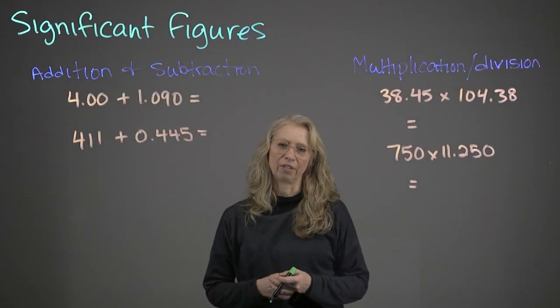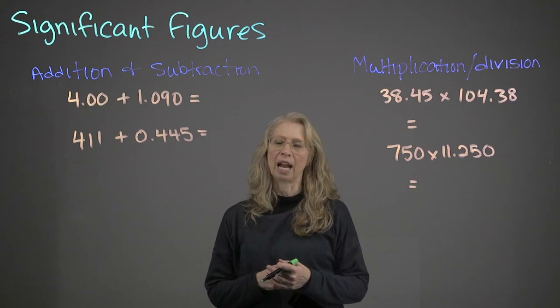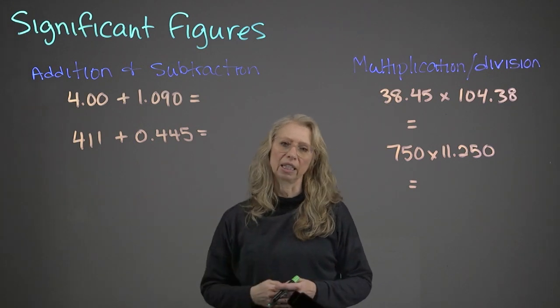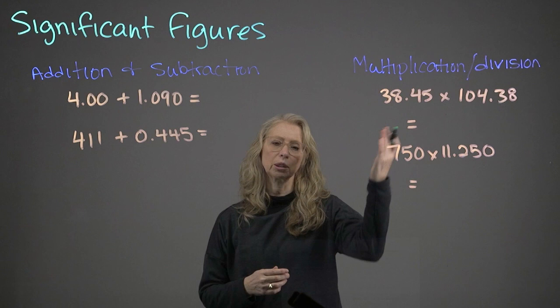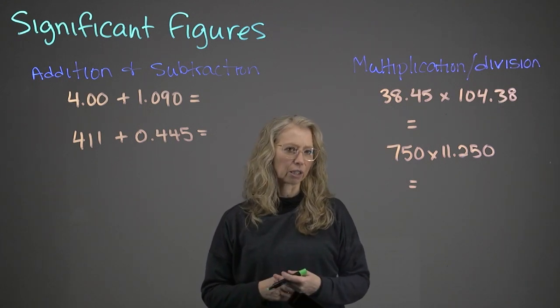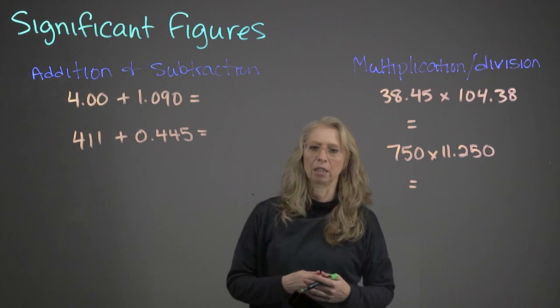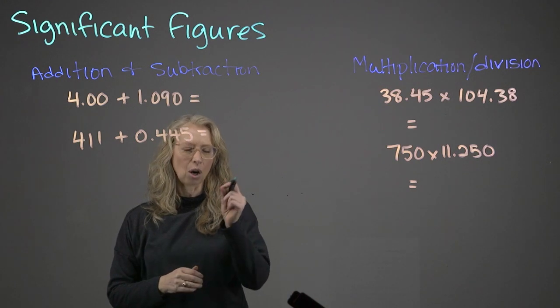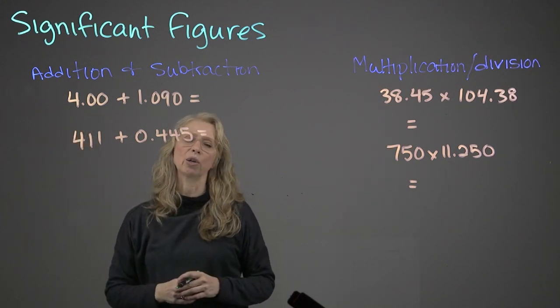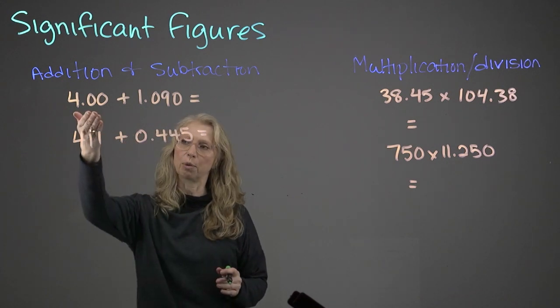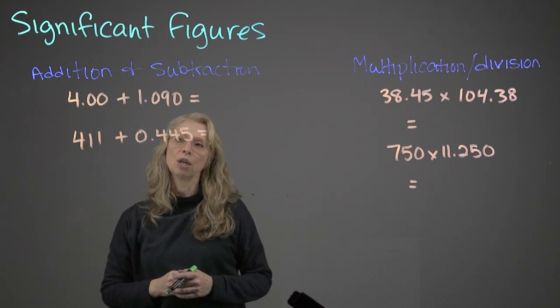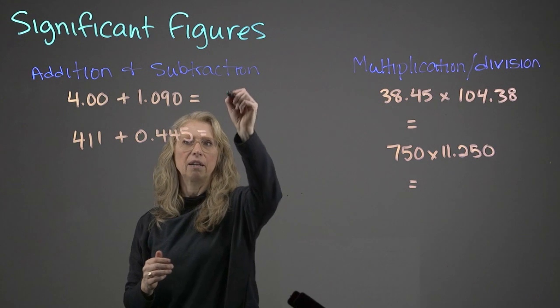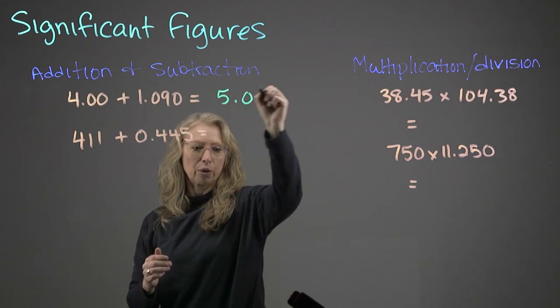When we're considering significant figures in a calculation, we have a couple of different rules. When we talk about addition and subtraction, we actually look at the number of decimal places. And when we talk about multiplication and division, we talk about significant figures. So let's start with addition and subtraction. Your answer will depend on the number of decimal places that are the smallest. So if we look at 4.00 and 1.090, we have two decimal places here. We have three decimal places here. So our answer can only have two decimal places. So our answer in this case would be 5.09.